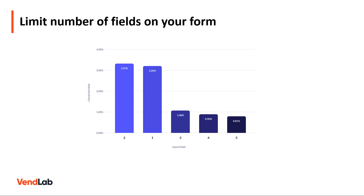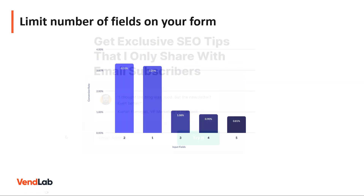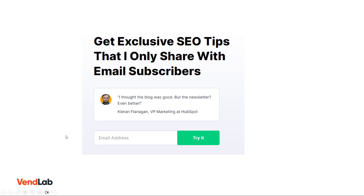When building a form, only ask for information you need. You can always ask people for more information once they become subscribers via a survey. Asking for a name in addition to an email is usually a good idea, as a name will enable you to personalise future emails. This example from Backlinko is a good example of a simple signup form with a single field — they're asking for the very minimum information to increase their signup rate.